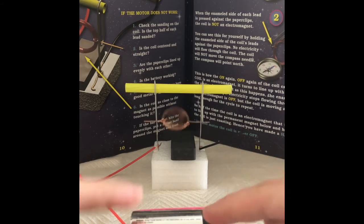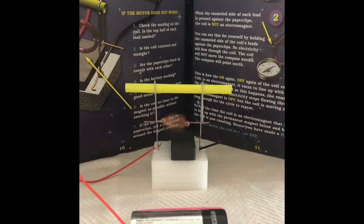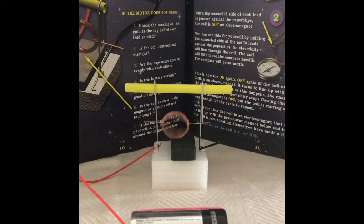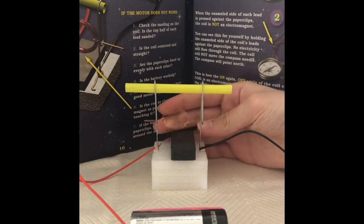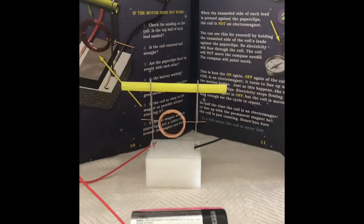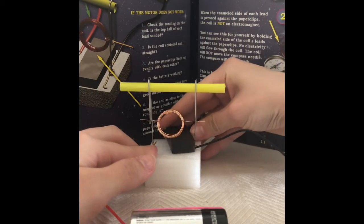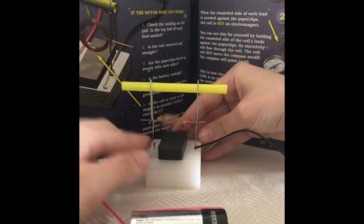Now this battery here creates electricity that goes from the wire to the paper clips and then to the coil. The magnet's importance is to create a magnetic field. See, if we were to take the magnet away, the coil would stop spinning. But as soon as we put it back, it starts spinning again.